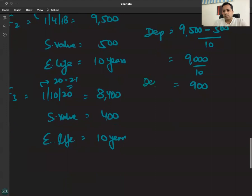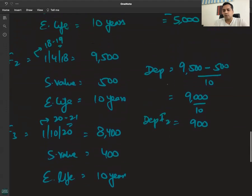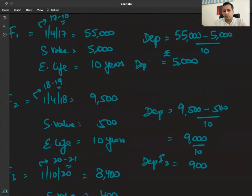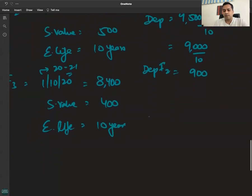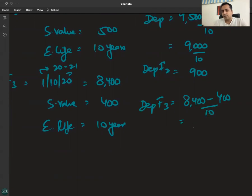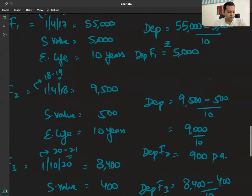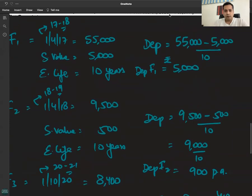Depreciation F1, and depreciation F3, 8,400 minus 400 divided by 10, which will be 800 per annum. 900 per annum, 5,000 per annum.